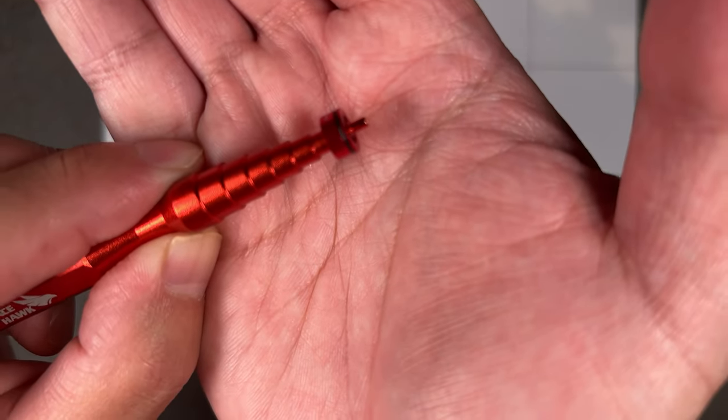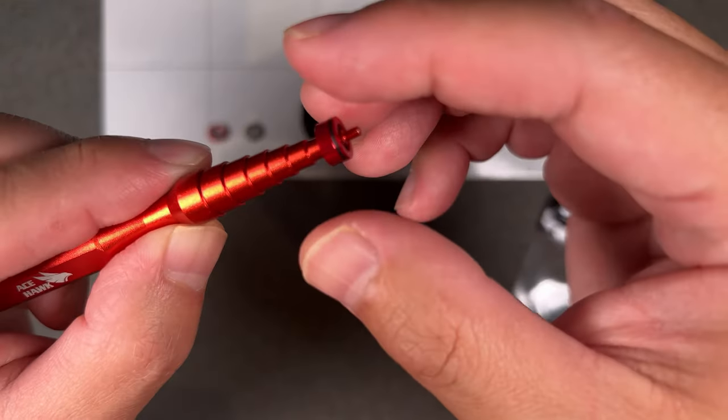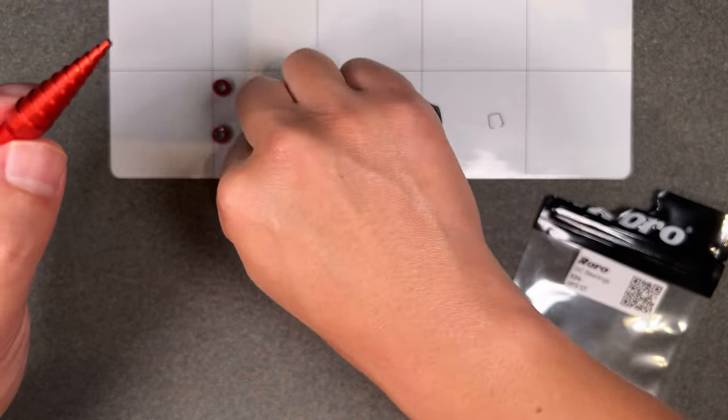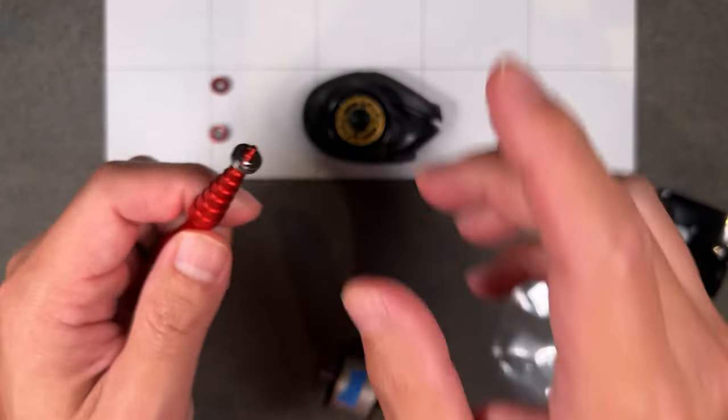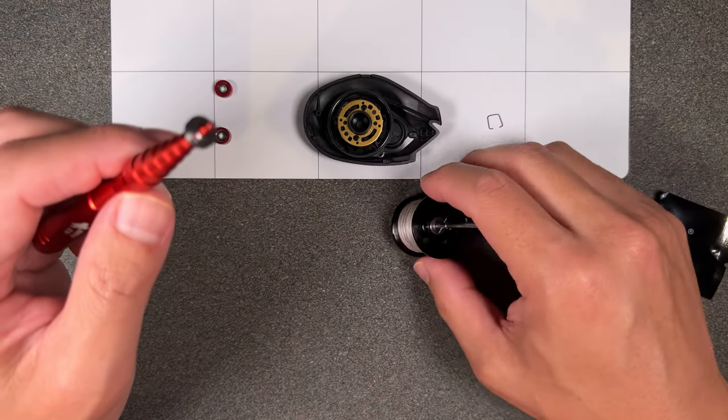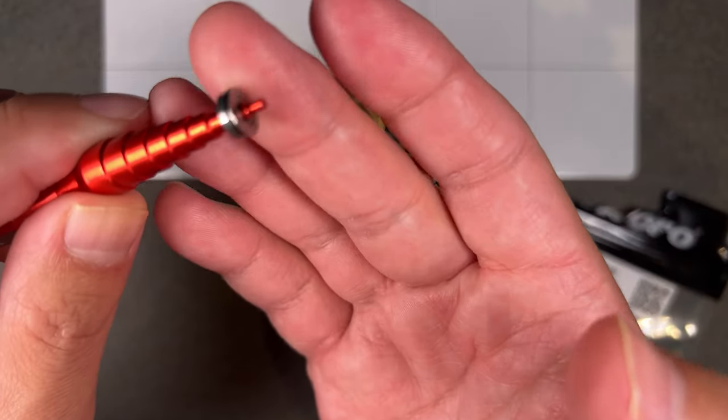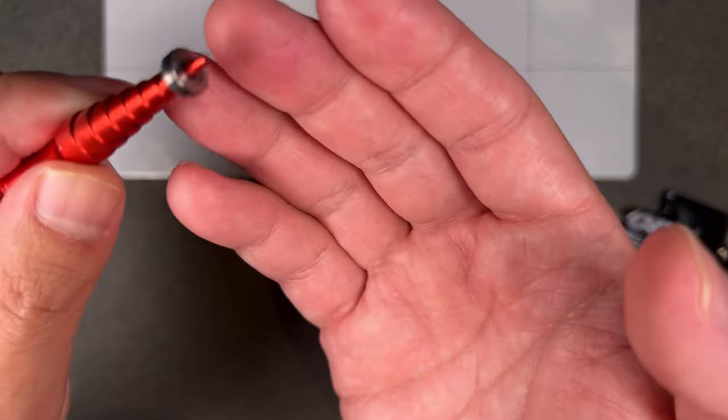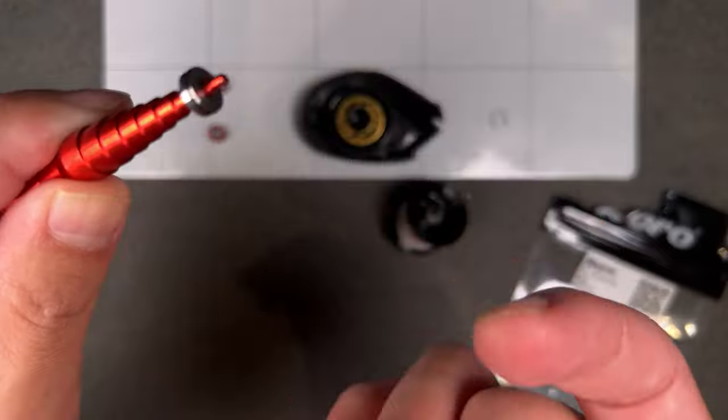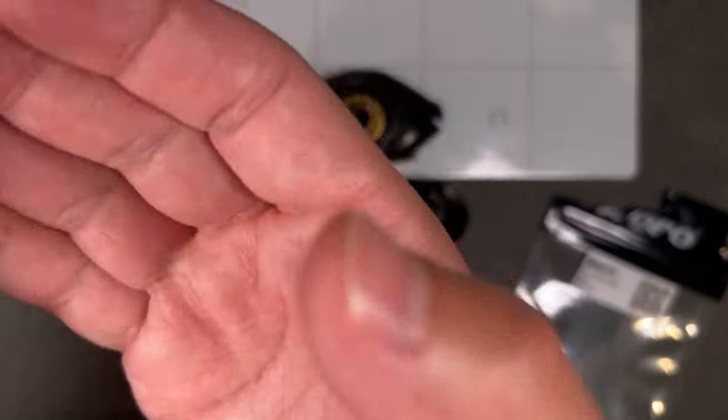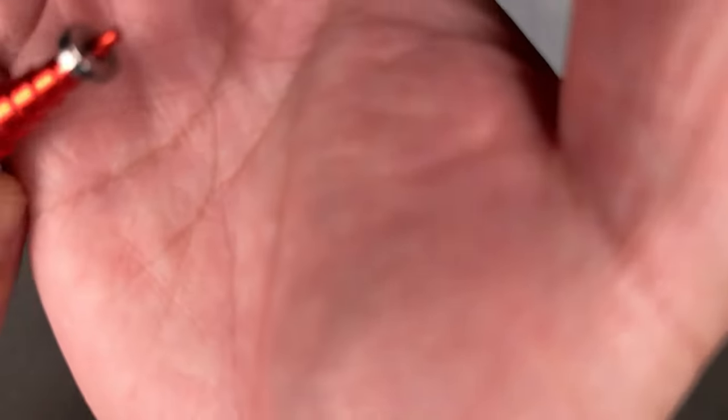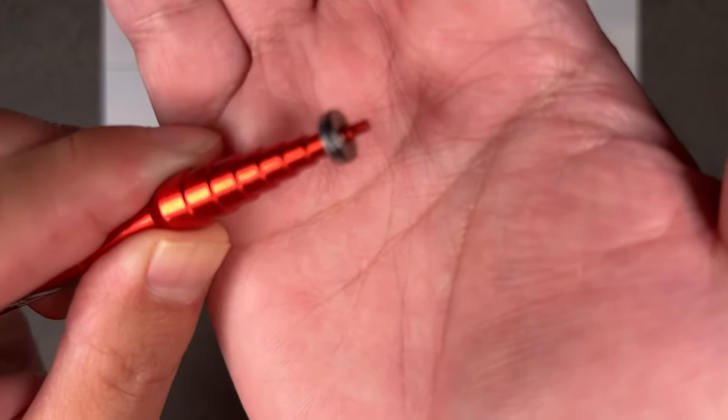It also rotates a lot freer, and that could be because I may have put a drop of BFS oil that came with the Aldebaran bearing. But take a listen. It doesn't spin very long, not nearly as long either.